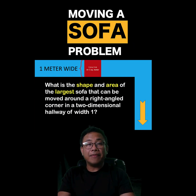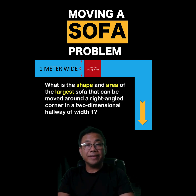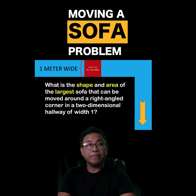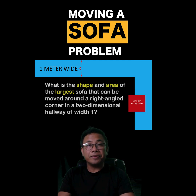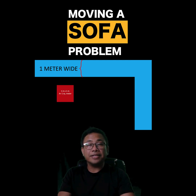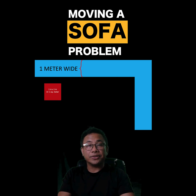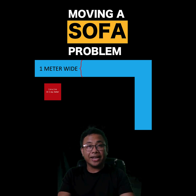Let's say our sofa is this red square with a dimension of 1 meter by 1 meter, and therefore its area is 1 square meter. We move it this way and slide it to its final destination. There's no problem if the sofa is a 1 meter by 1 meter square. But is that the sofa with the largest possible area?